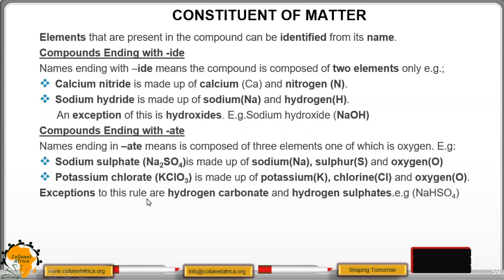Exception to this rule are hydrogen carbonate and hydrogen sulfate. For example, we have sodium hydrogen sulfate. In this case, we have sodium, we have hydrogen, we have sulfur, and oxygen. So these are four elements in this one. So the sulfate we said here, there are three, but we have this exception of hydrogen carbonate and hydrogen sulfate.